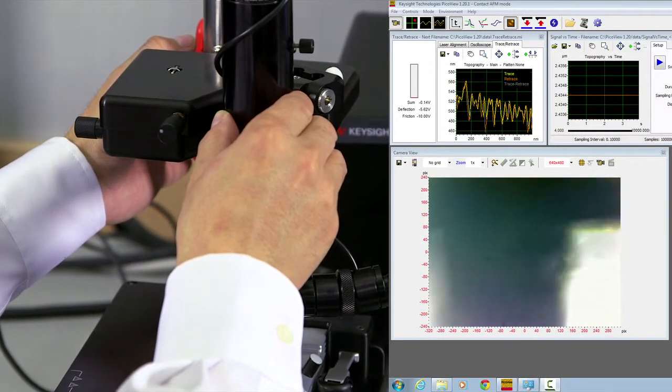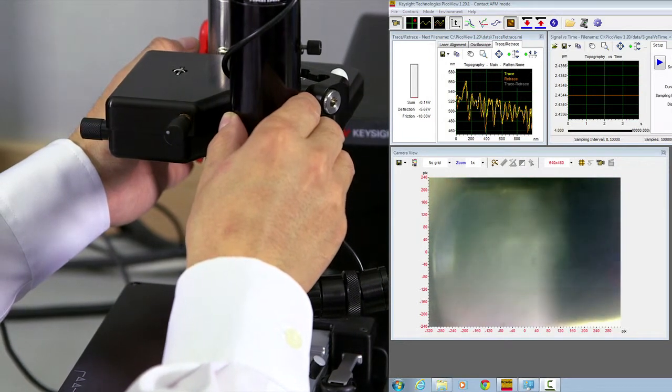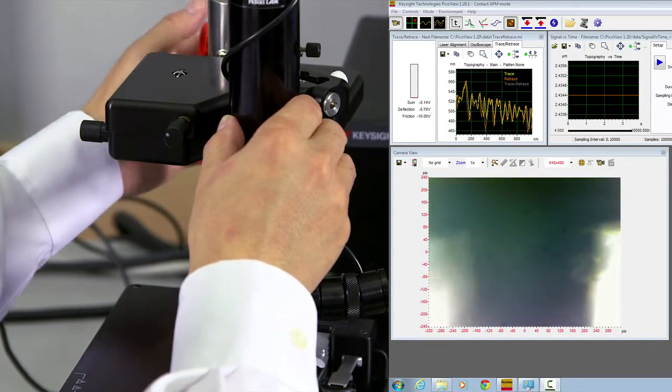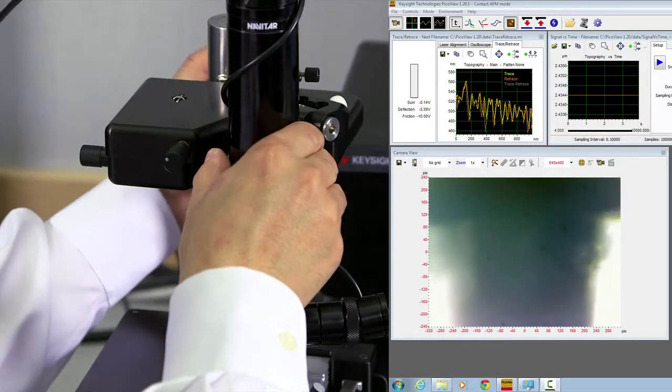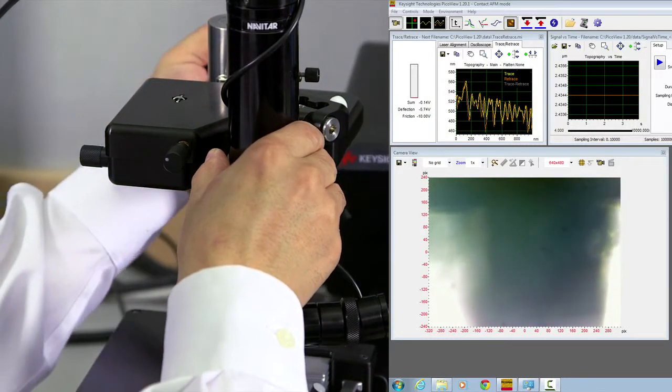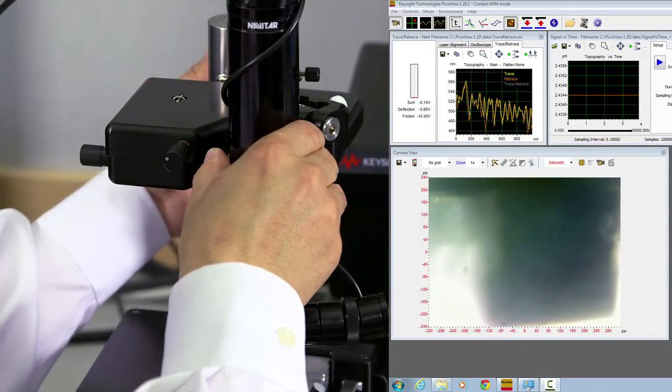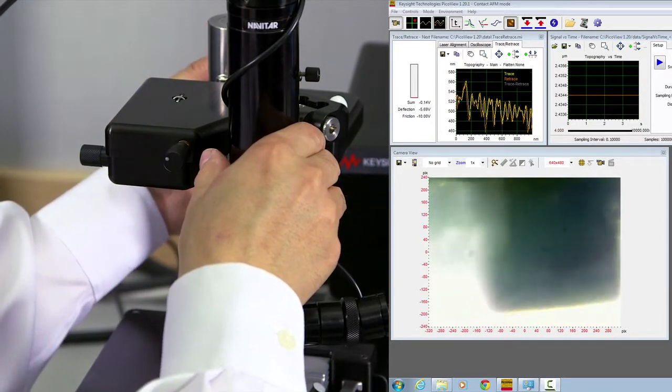Rotate until you can see something. And then turn the Allen key to tighten the set screw until the optical microscope assembly cannot be rotated anymore.